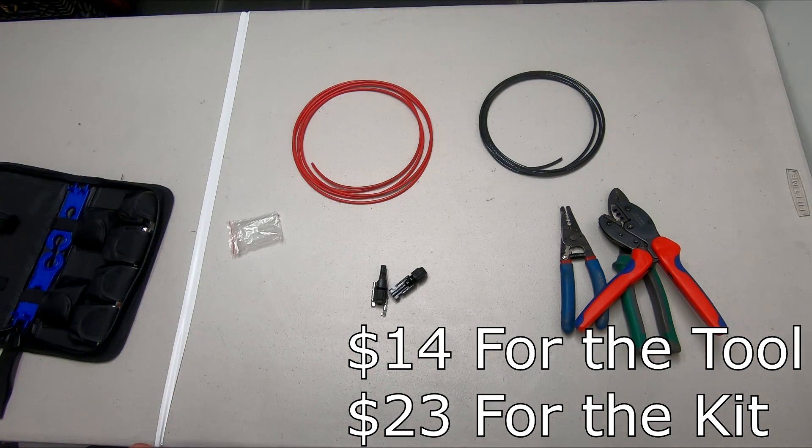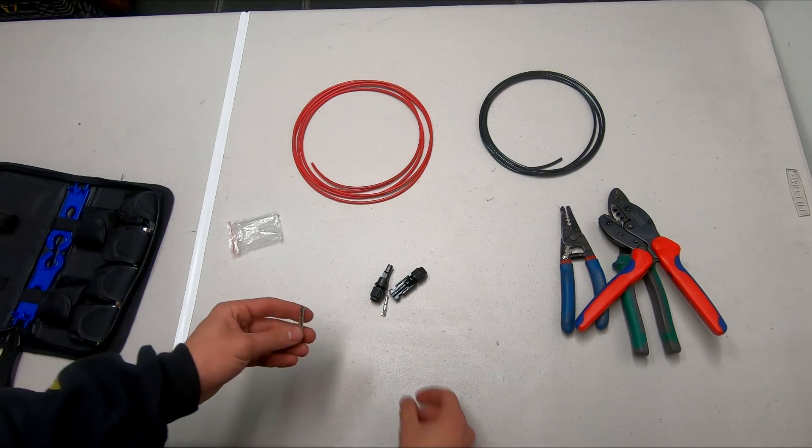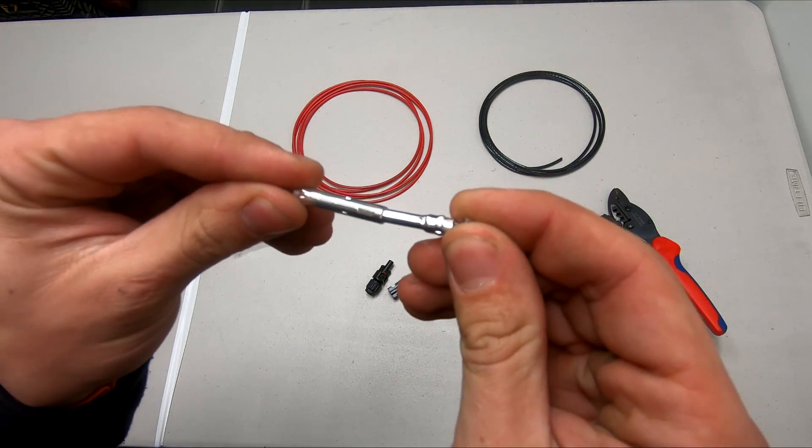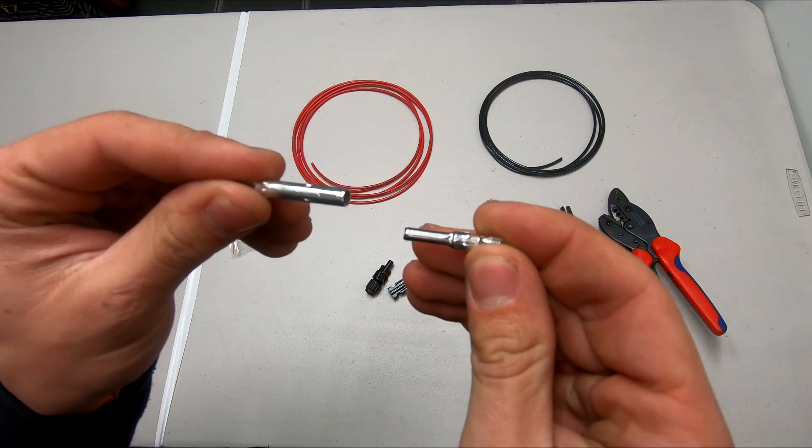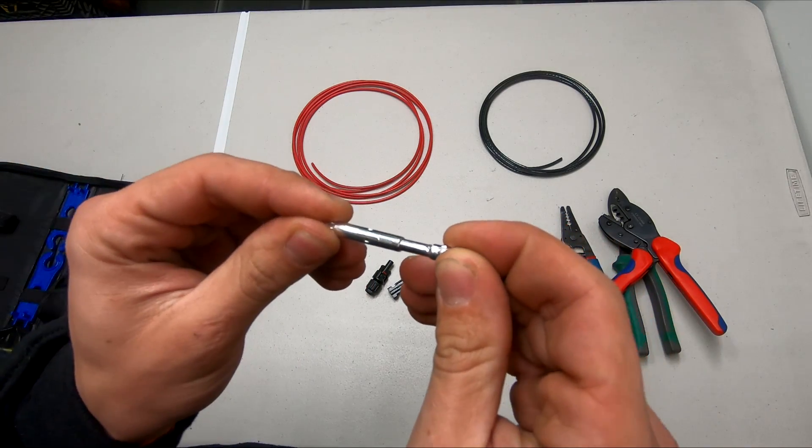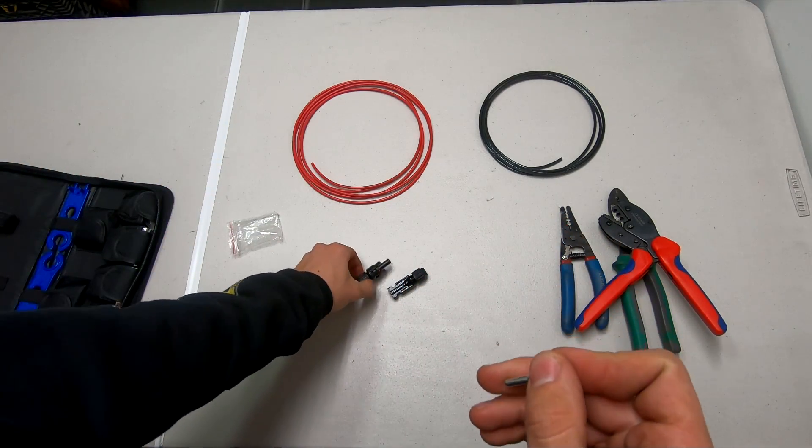Let's take a closer look at what comes in these little packages. You have these little ferrules which, as you can see, will go in each other inside of the connectors. Now one thing to keep in mind: the female ferrule goes with the male connector.